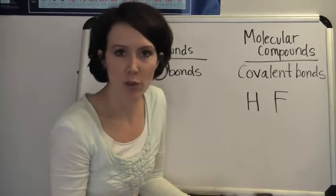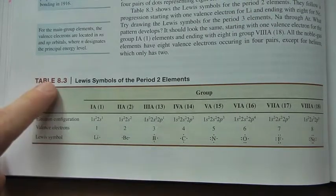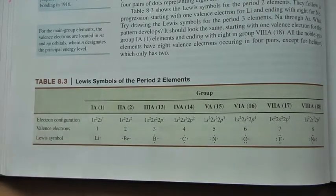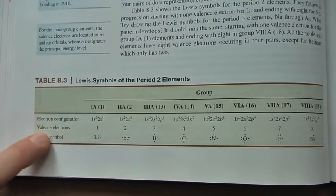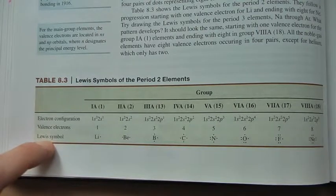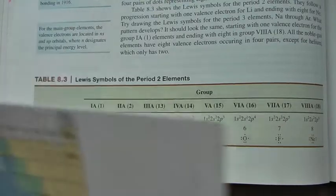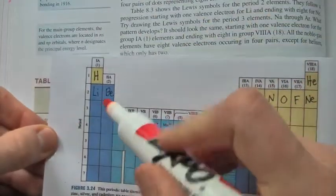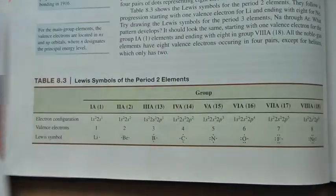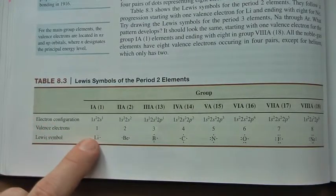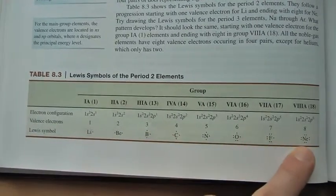Let's review what Lewis dot structures are. On page 294 in your textbook, you'll see table 8.3. The electron configuration is mentioned first, then valence electrons, and then the Lewis symbol. We are looking at the second row of the periodic table — lithium, beryllium, boron, carbon, nitrogen, oxygen, fluorine, and neon.